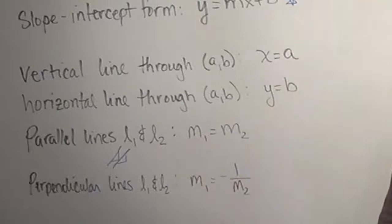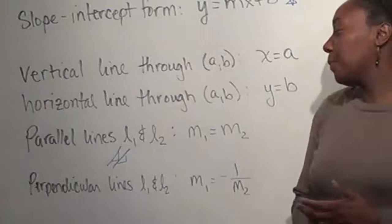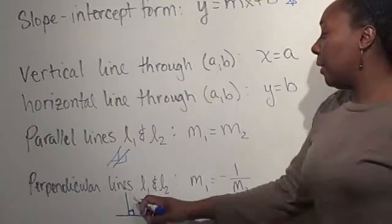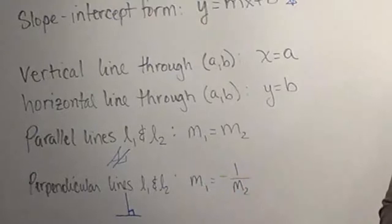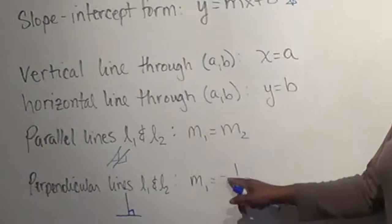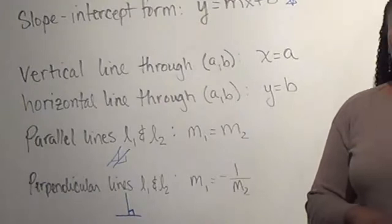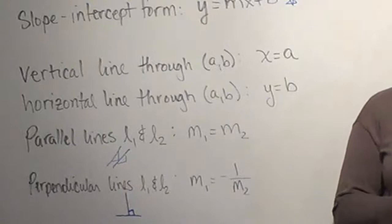For perpendicular lines — that's the third case where two lines intersect at exactly right angles — we denote this with a symbol that looks like two lines with a little box in the corner. If l₁ and l₂ are perpendicular, we find the relationship between slopes by taking the negative reciprocal: m₁ equals negative 1 over m₂. The third case, where lines intersect but not at a right angle, is dealt with in trigonometry or upper calculus classes.